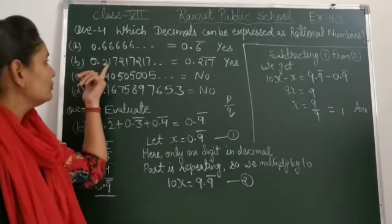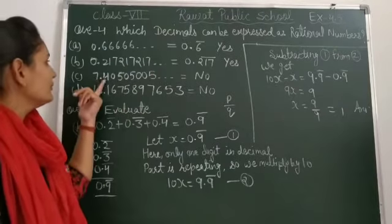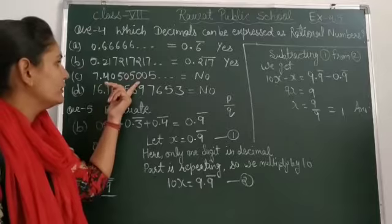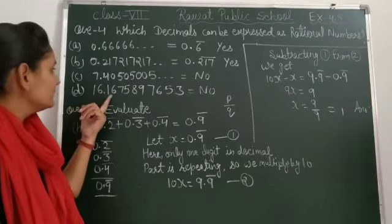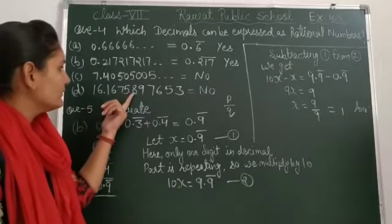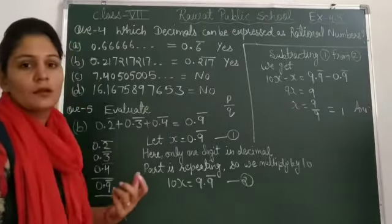The examples are: 0.66666 and so on, 0.217217217 and so on, 7.40505005 and so on, and 16.16758876.53.